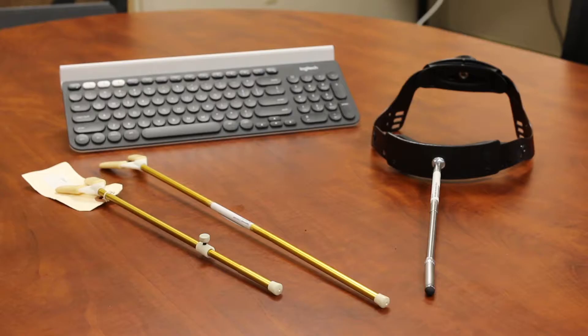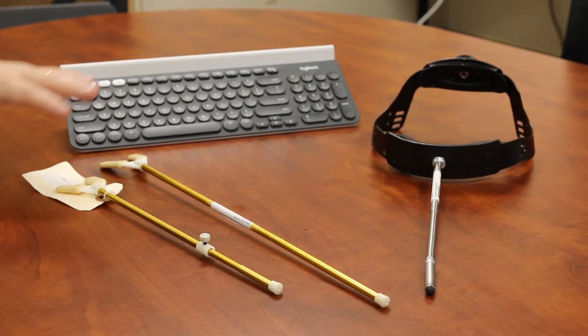First is a mouth stick, the others are called head pointers, so let's go ahead and take a look. All right, so today we're talking about mouth sticks. These are the gold ones over here and head pointers, the silver one over there.